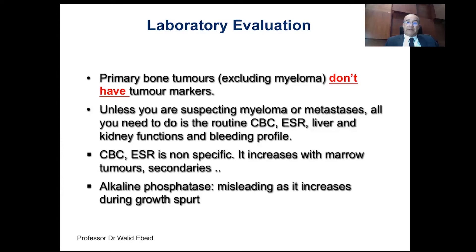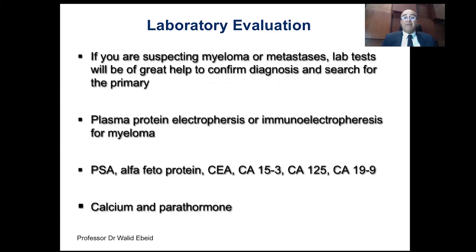The next step is doing lab tests. Lab tests are not necessary when evaluating a primary bone tumor — they are only of value when suspecting myeloma or metastasis. There are no tumor markers for osteosarcoma, chondrosarcoma, or Ewing sarcoma. CBC and ESR are not specific. Alkaline phosphatase may be elevated but for other reasons — these are very non-specific tests. However, labs become very important if you're suspecting myeloma or metastasis: plasma protein electrophoresis and immunoelectrophoresis for myeloma, and tumor markers like PSA, alpha-fetoprotein, and carcinoembryonic antigen when looking for a primary tumor. We also do calcium and parathormone to rule out hyperparathyroidism.